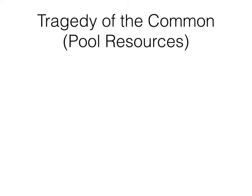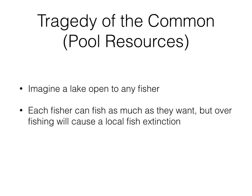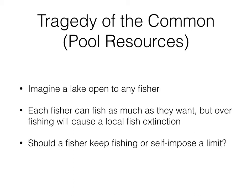This is why we call it the tragedy of the commons — it's the tragedy of common pool resources, because they are difficult to manage. Let's go through an example. Imagine you're on a big lake and anybody can fish in it. Each fisher can fish as much as he or she wants, but overfishing will cause local fish extinction. So if everybody fishes as much as they want, the lake will be fished dry. The question is: should a fisher keep fishing, or should they self-impose a limit?